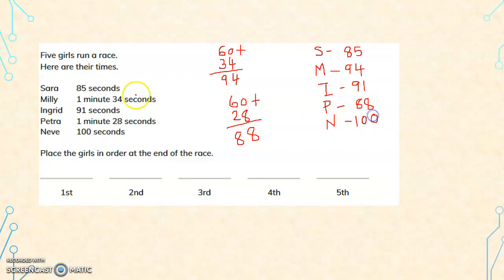And now everything is given in seconds. So the smallest time is 85. Who took the least time? Sara. So Sara completed the race first. Sara won the race. Then after that, 1 minute and 28 seconds, Petra. Then third is 91, Ingrid. Then 94, Millie. And 100 seconds, Neve.